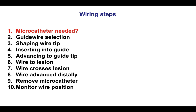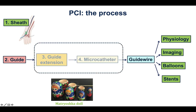Starting with the first step, which is about needing a microcatheter. PCI is performed through a telescoping system that involves a sheath providing access to a vessel, usually the radial or the femoral artery, and then a guide catheter through which the rest of the equipment is delivered. Additional layers of telescoping can be used to improve support — number one, a guide extension, and number two, a microcatheter.